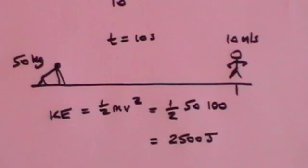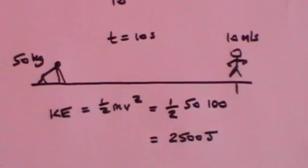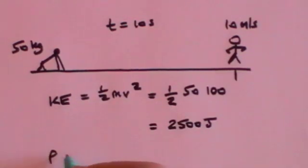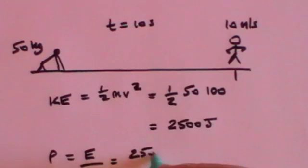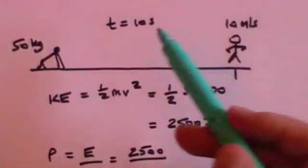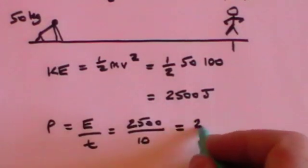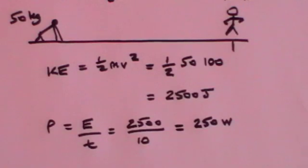So that is the energy that your body has had to create to get from a standing start to running at 10 metres per second. The power is the energy divided by the time, which is 2,500 divided by 10 seconds, and so that equals 250 watts.